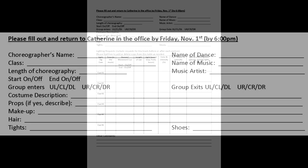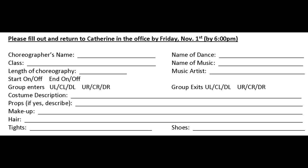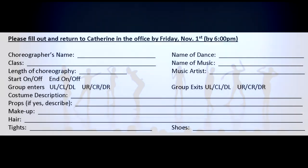This sheet includes space for you to give us important information for your piece. Your name, the class, the name of your piece, and the music credit are used by the office staff to create a program. They also use the details on the sheet to compile information to be sent to dancers and parents regarding hair, makeup, tights, and shoes.